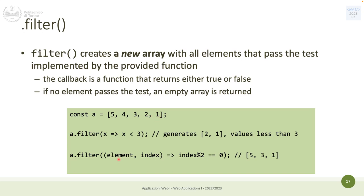Like 'every' and others, filter can have additional optional parameters. The mandatory first parameter is the element to iterate (x, element, letter — whatever you name it). The second optional parameter is the index of the array, allowing you to check if the index satisfies a condition rather than the element's content. You can also have more complex checks combining both element and index.